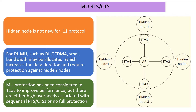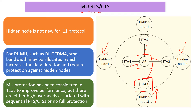The idea behind the new RTS mechanisms and the corresponding CTS is as follows. We will take downlink as an example. When the AP wants to send simultaneously to four stations through OFDMA, multi-user MIMO, or a combination, there could be hidden nodes which might not hear the AP's transmissions — possibly closer to the stations — that could disturb the station's reception of the MU PPDU. That is the problem context.